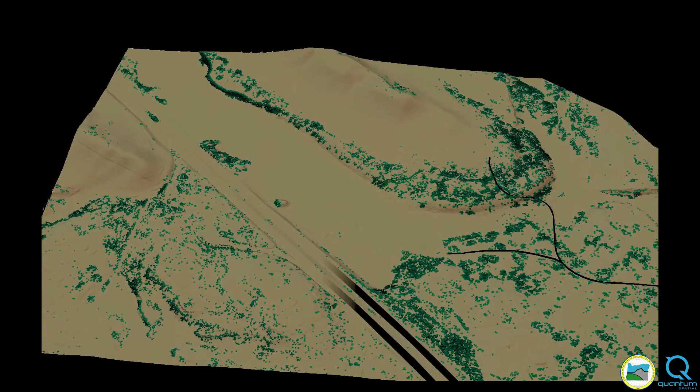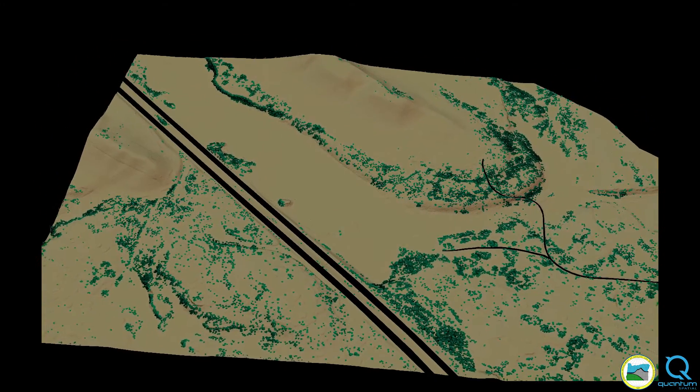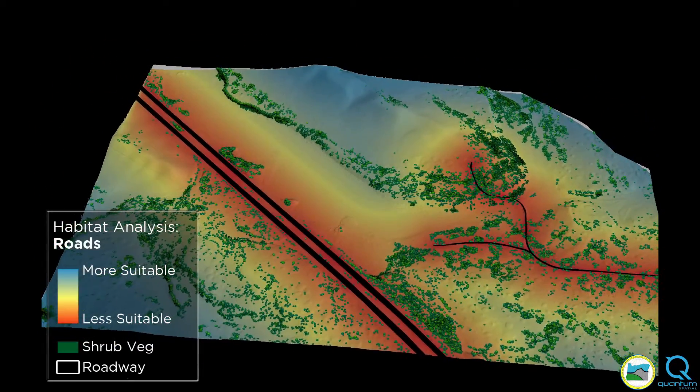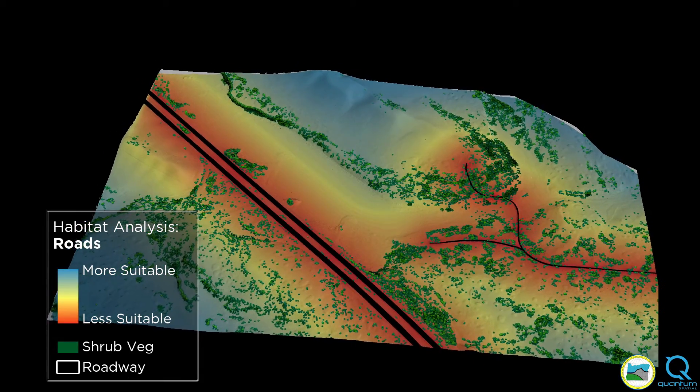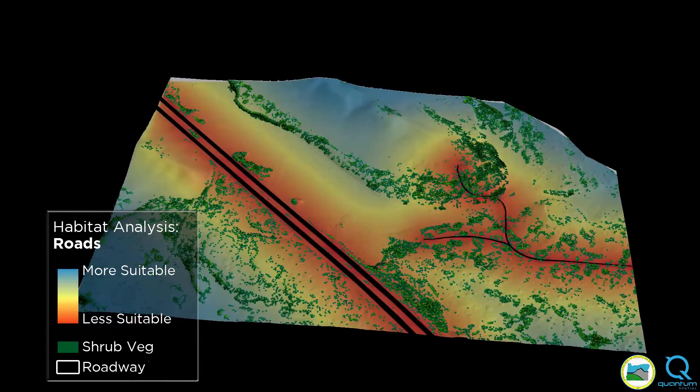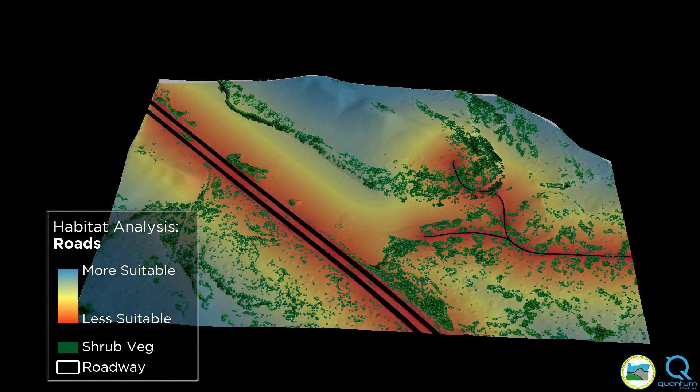Once shrub vegetation is identified, models incorporate other factors such as roads, trees, tall structures, and water.